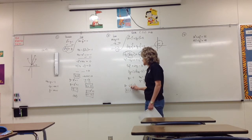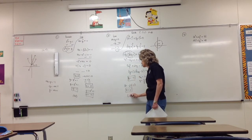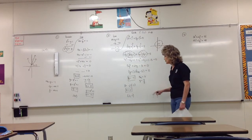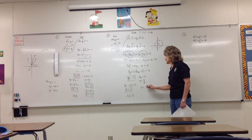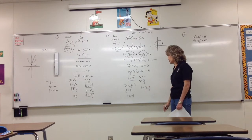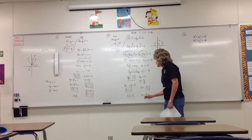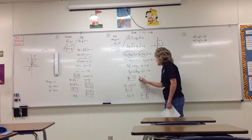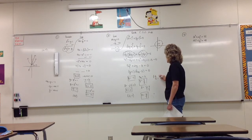Writing this as an ordered pair: (2, negative 1). If y is 3/5, then x equals negative 2 times 3/5, which gives x equals negative 6/5. So that ordered pair is (negative 6/5, 3/5).